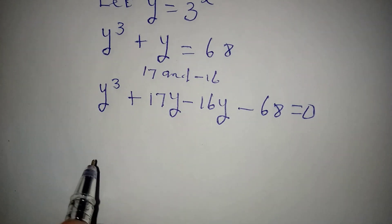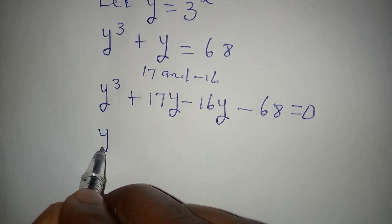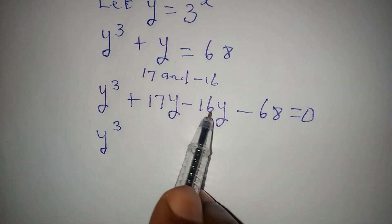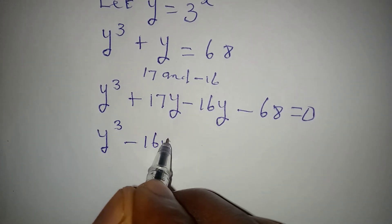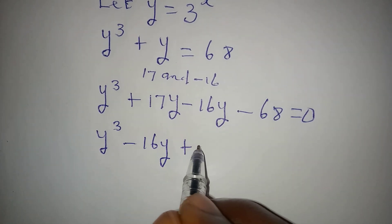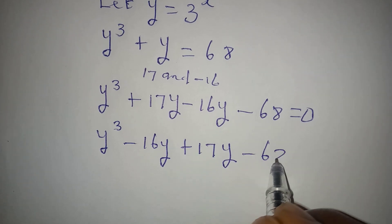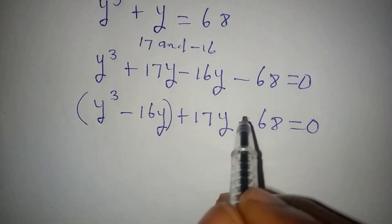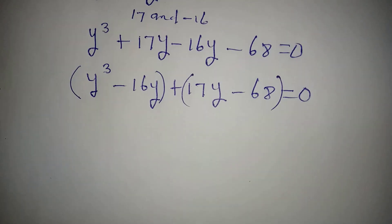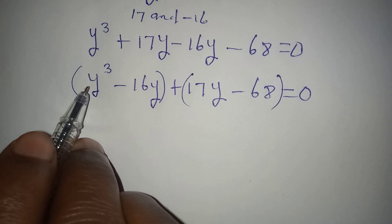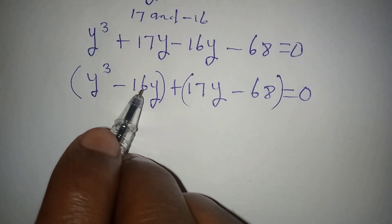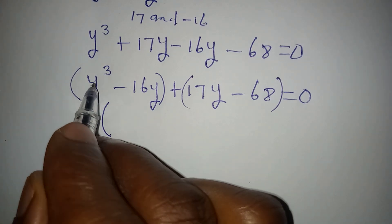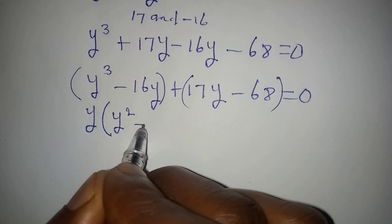Continuing from here: y to the power of 3 minus 16y, rearranging, plus 17y minus 68 equals 0. Now I will be able to factorize the first two terms and the last two terms separately. From the first group, y is the common factor, and we have y squared minus 16.